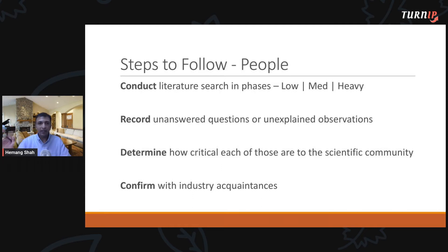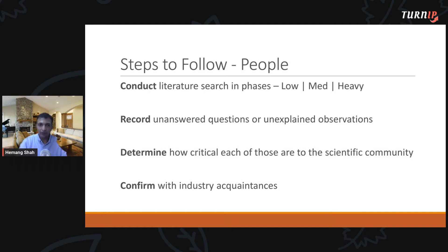To recap the people segment for research project identification: we conduct our literature search in phases — low, medium, and high. From that, we record unanswered questions or unexplained observations, basically finding something worth probing further. Before we actually probe them, we determine how critical those questions and observations are to the scientific community. Separately, we confirm with our industry colleagues — the people we want to do tech transfer to — whether they will benefit from these unanswered questions.